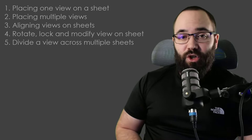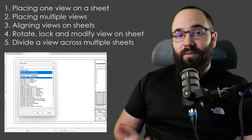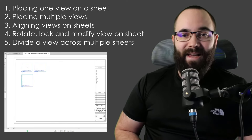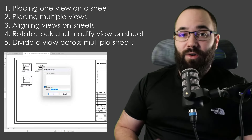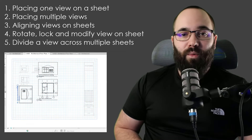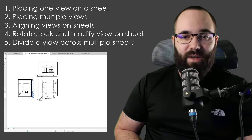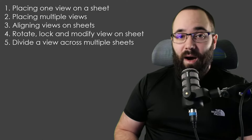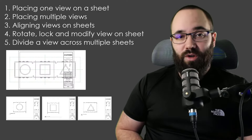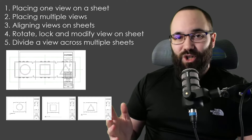This video is going to be all about placing views on sheets in Revit. I'm going to be showing you how to place one view on a sheet, then how to place multiple views on a sheet at once, how to align those views either on one single sheet or across multiple sheets. Then we're going to be talking about how to rotate those views, how to lock their position, how to modify them on a sheet, and finally how to split a single view across multiple sheets.